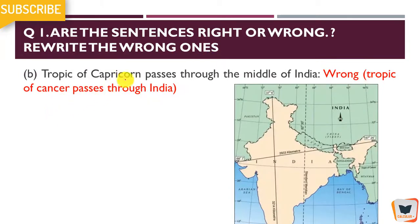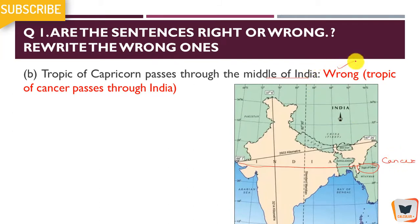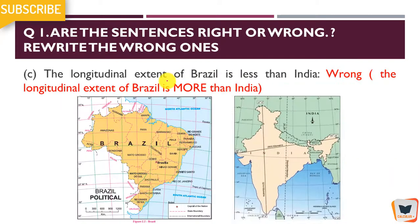Tropic of Capricorn passes through the middle of India. As you can see, the line which passes through the middle of India is not the Tropic of Capricorn — it is the Tropic of Cancer. That's why the sentence is wrong, and you have to correct it: the Tropic of Cancer passes through the middle of India.